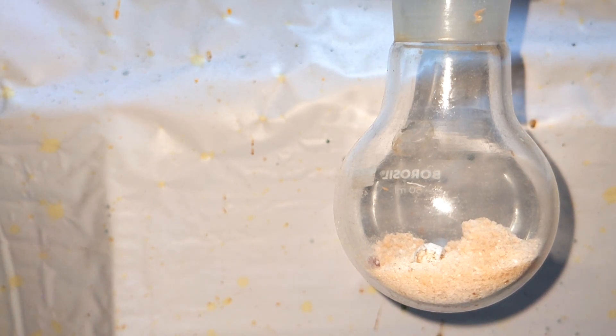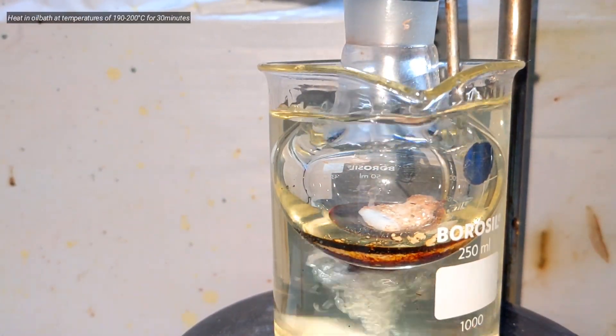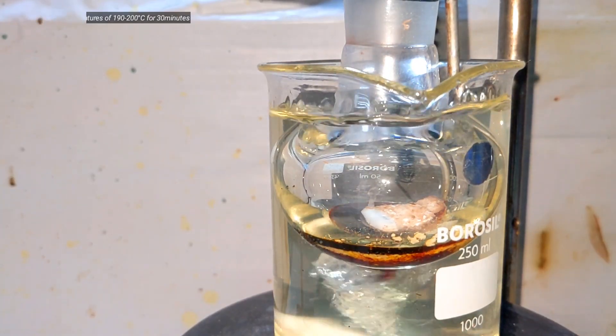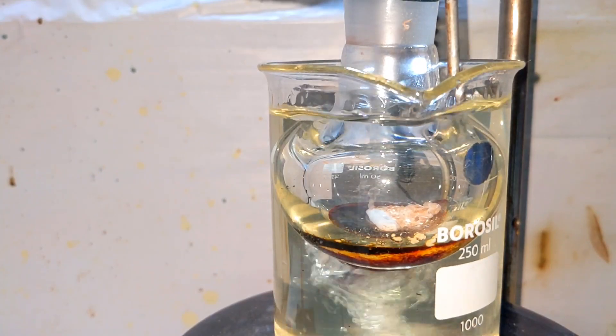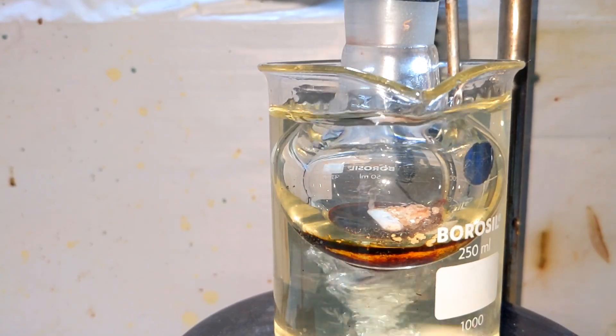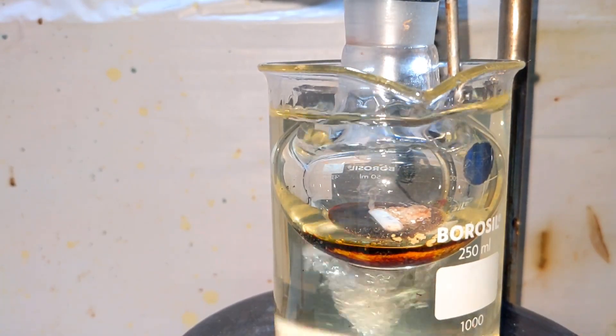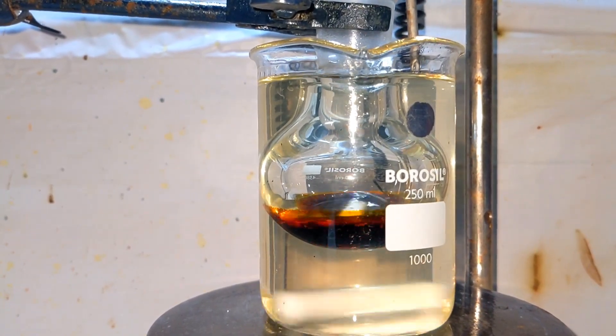A stir bar was then placed in the flask and the flask was placed in an oil bath at 190 to 200 degrees Celsius for 30 minutes. You can see how the solid reactants melt, resulting in a very dark red colored solution. After the complete meltdown, the stir bar starts to function.